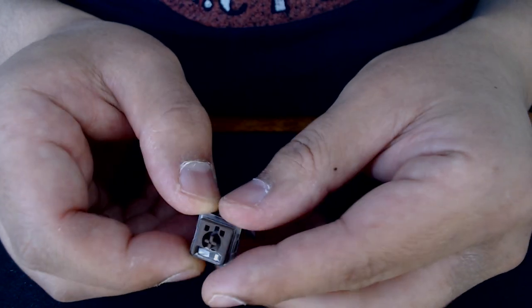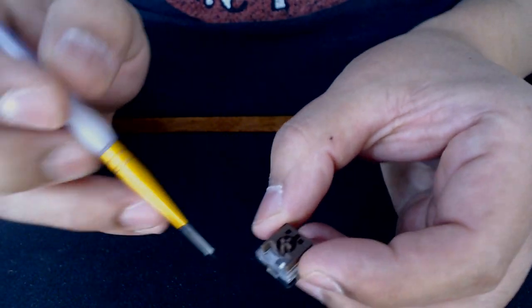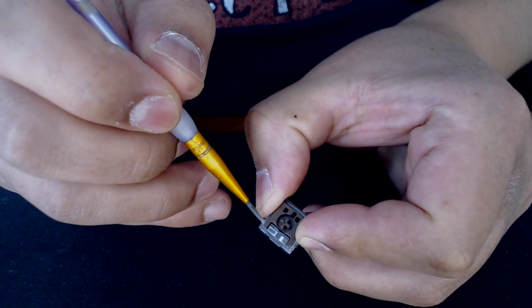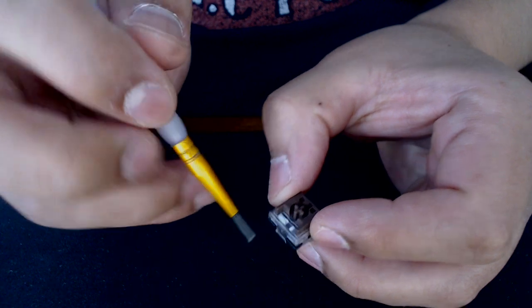Okay, so I already lubed all my switches, but basically what you want to watch out for with these browns when you're lubing, or all switches in general, is this little section right here where it looks like a little rectangle area. You actually have to lube that too because it's very close, so you'll get some of that scratchiness from there.